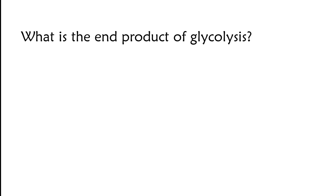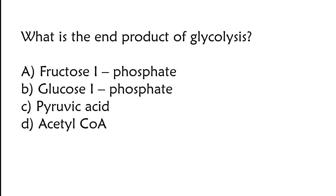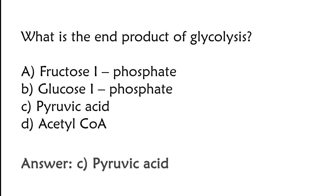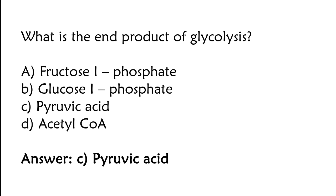What is the end product of glycolysis? Fructose 1-phosphate, glucose 1-phosphate, pyruvic acid, or acetyl coenzyme A. The correct answer is option C. Pyruvic acid is the end product of glycolysis.